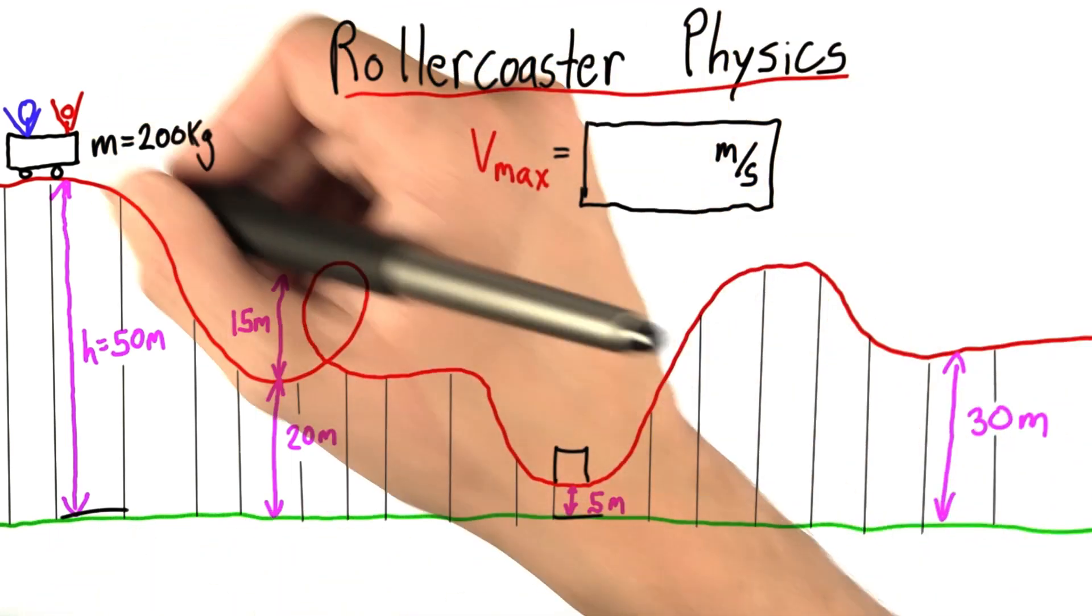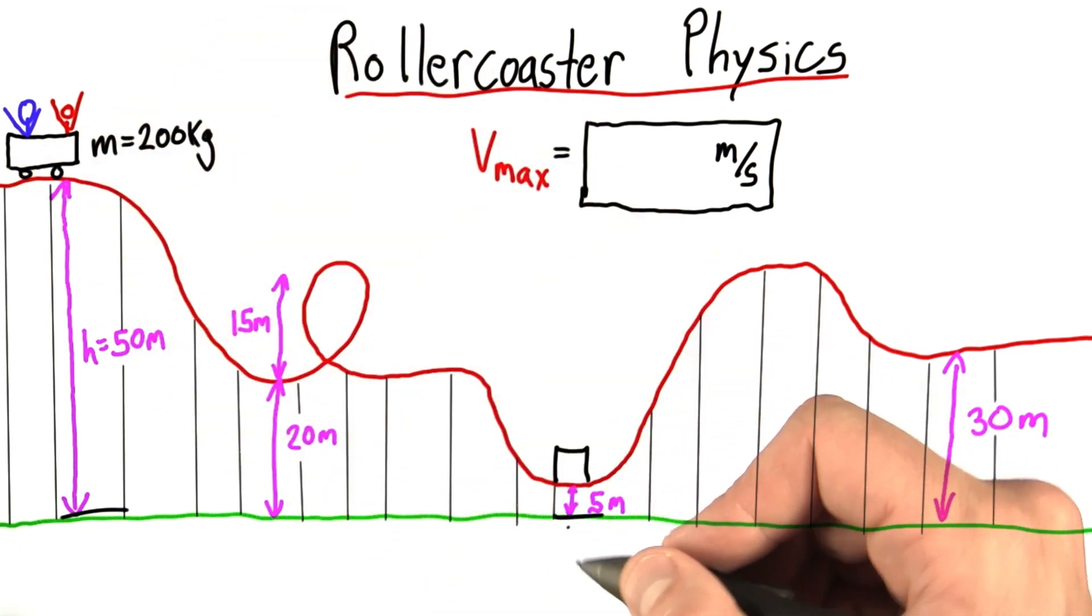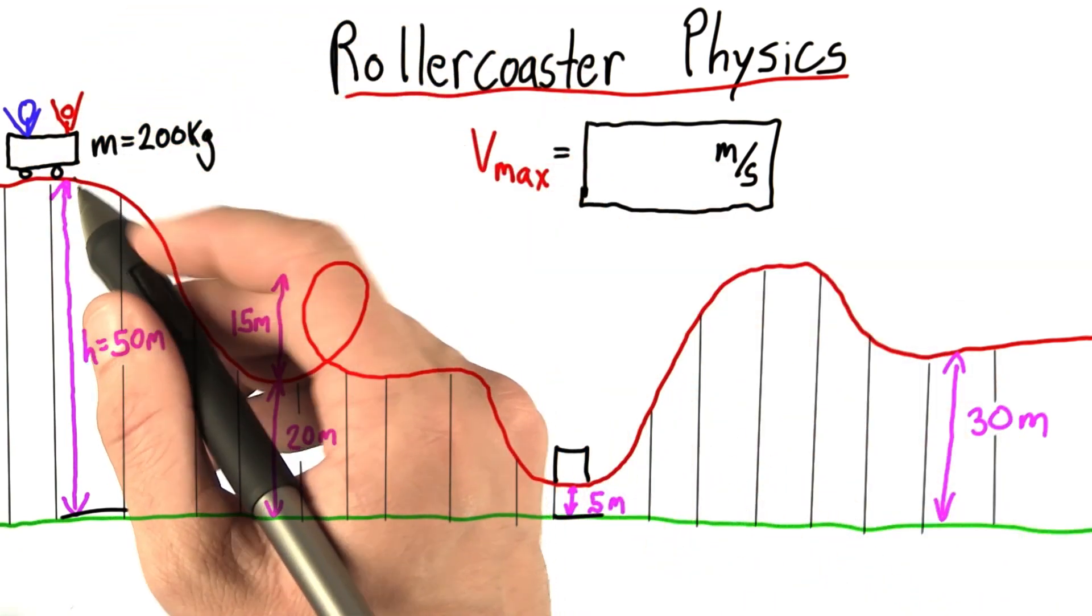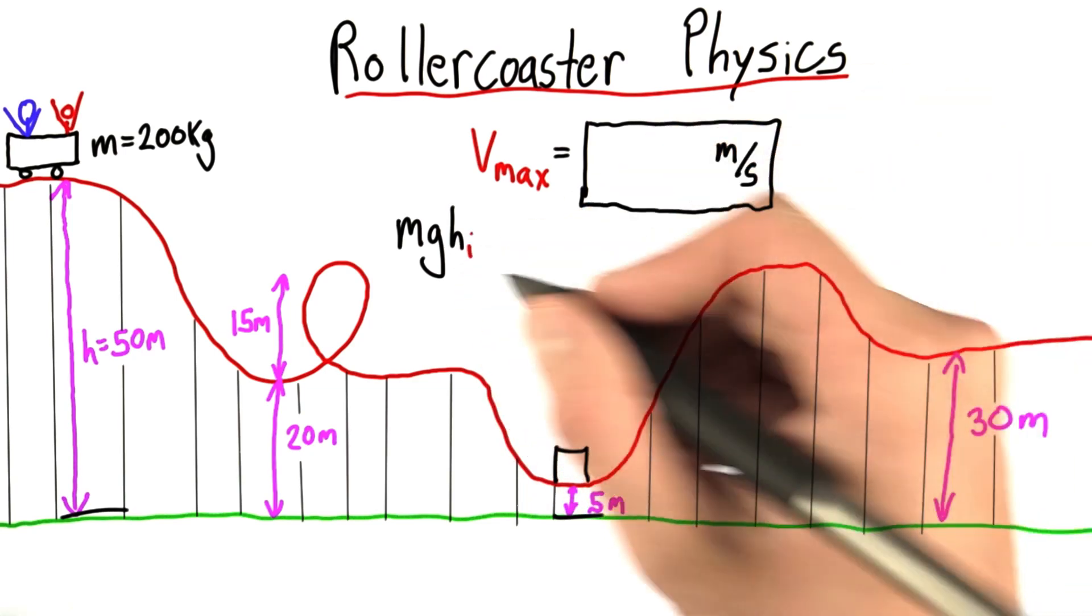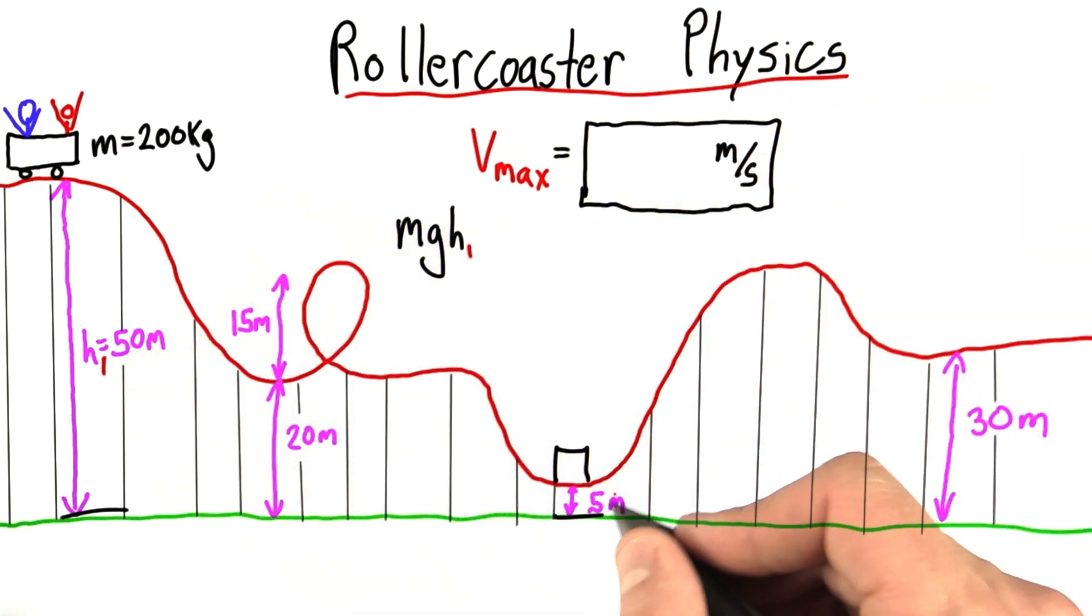So, let's see. Energy is conserved means energy up here equals energy down here. Roller coaster starts at rest, which means it starts with only potential energy. I'm actually going to call this h1 to distinguish it from this h over here.